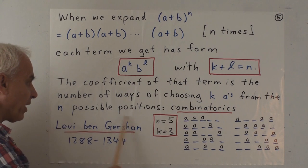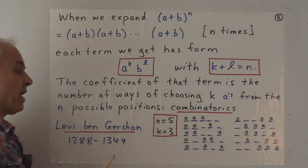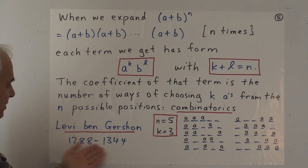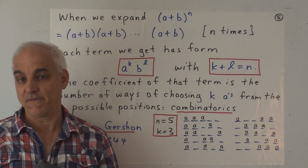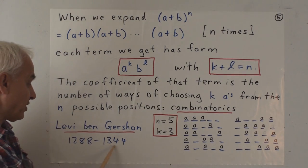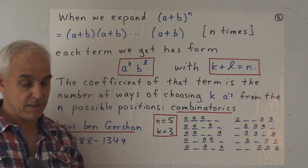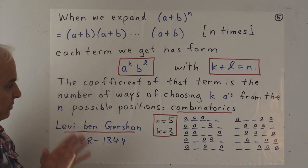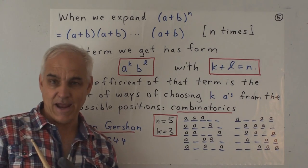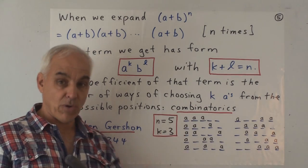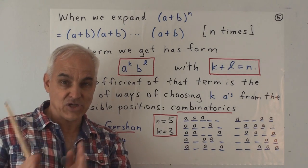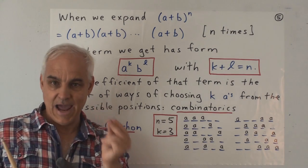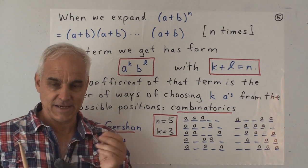So this combinatorial aspect of the binomial theorem was perhaps first appreciated fully by Levi Ben-Gershon, who was a Jewish scholar who lived in France around 1288 to 1344. He was also an astronomer. And I guess he was maybe the first to realize that the binomial theorem and what we now call combinatorics were intimately connected. These coefficients that appear in these expansions are actually counting something. That's the key point.